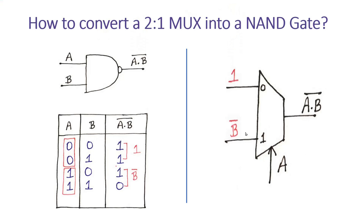Let me reveal the answer. This is a NAND gate. It has two inputs A and B, and the output is A dot B bar. This is how a NAND gate works. This is the truth table of a NAND gate.